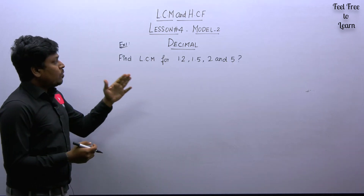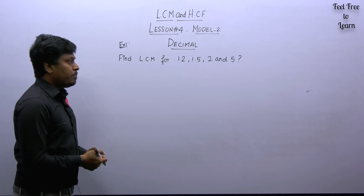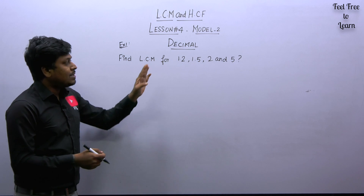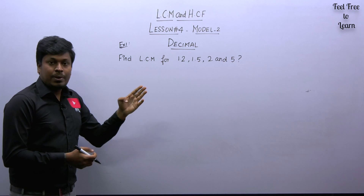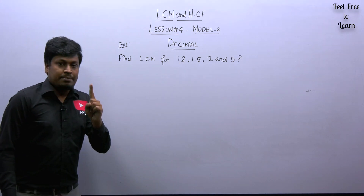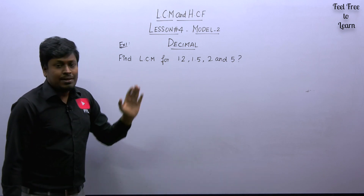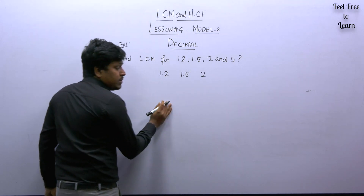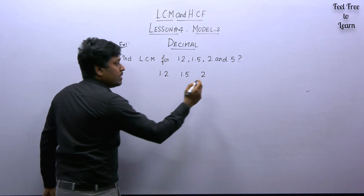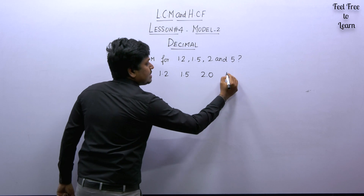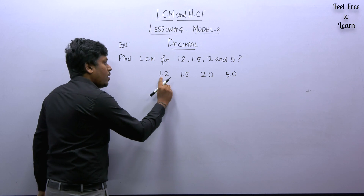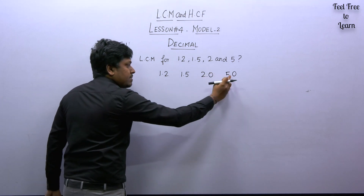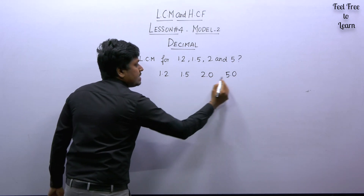Example question one: find LCM for 1.2, 1.5, 2, and 5. Our target is to find what is the LCM for these four numbers. Out of these four numbers, two have a decimal value. The first step is to convert all values to equal decimal points. The first number is 1.2, second is 1.5, third is 2 — make it 2.0, and last number 5 becomes 5.0. Now all four numbers have an equal decimal value.